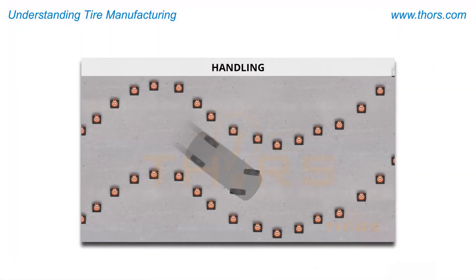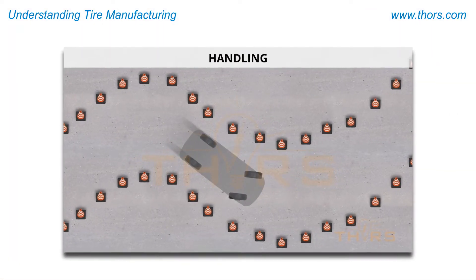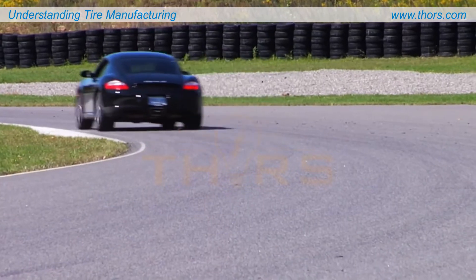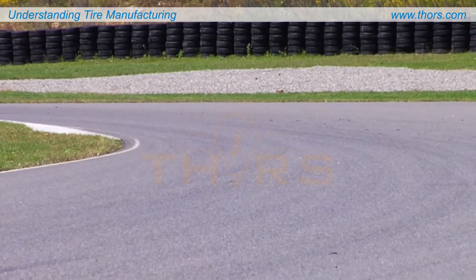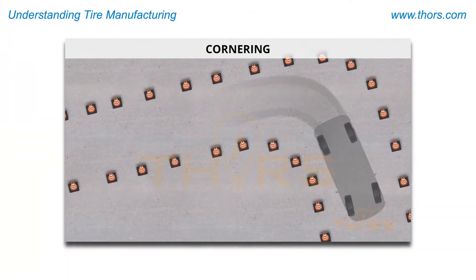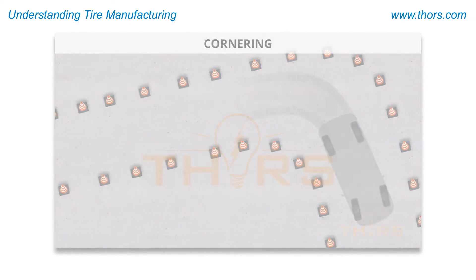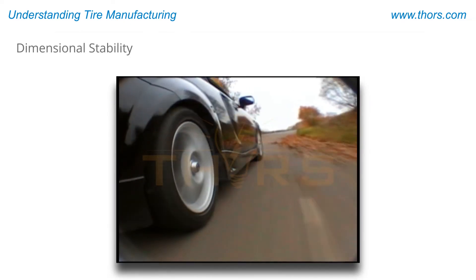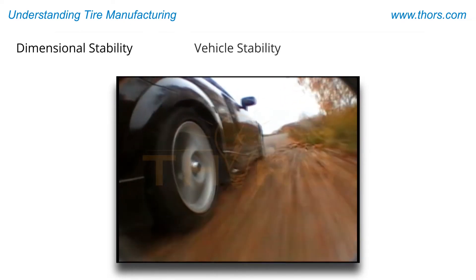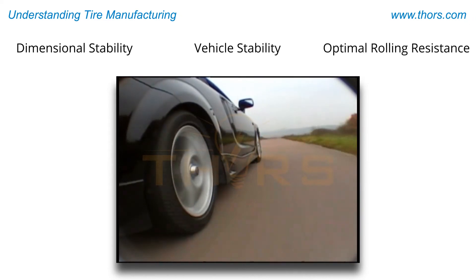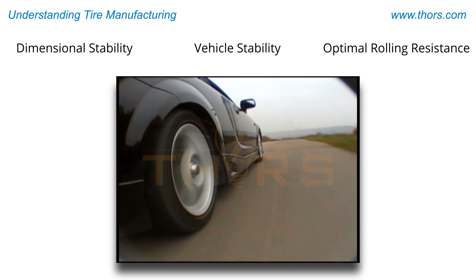Controlled steering and handling response and operating speeds, such as when changing lanes and quartering, are also required. In addition, tires provide dimensional stability, vehicle stability, and optimal rolling resistance to achieve the desired fuel economy.